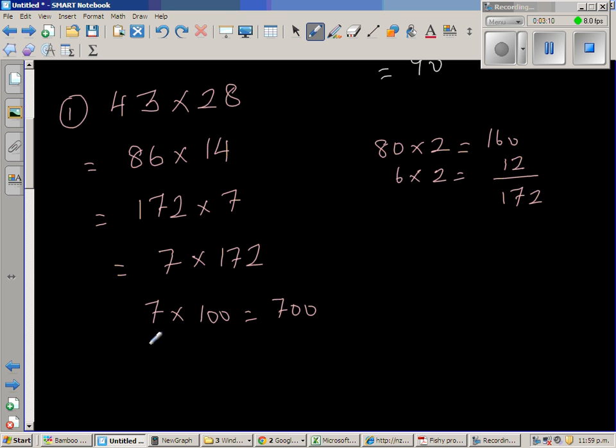Then 7 times 70. So I know 7 times 7 is 49. So this is 490. And I got 7 times 2. 7 times 2 is 14.